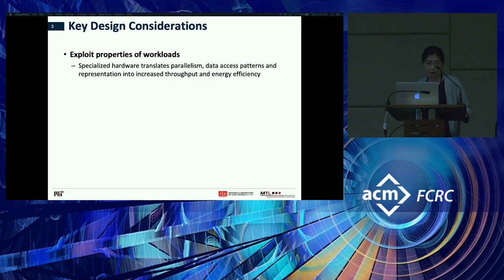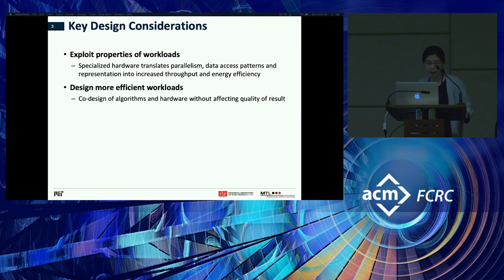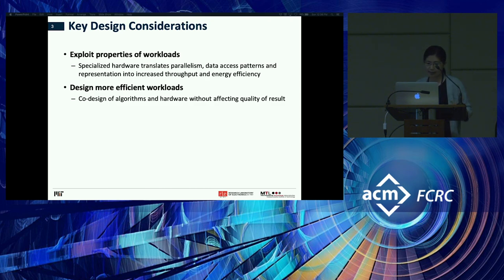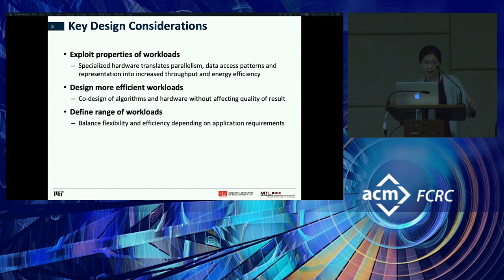The first thing we typically look at is how to exploit the properties of the workload — translating parallelism, data access patterns, representations, and data correlation into increased throughput and energy efficiency. We also want to go up and actually change the workloads rather than viewing them as static inputs. We want a co-design of both algorithms and hardware, keeping application quality in mind. Finally, we need to define the range of workloads we want to support — defining what 'domain' means in domain-specific architecture — and balance flexibility with efficiency depending on application requirements.